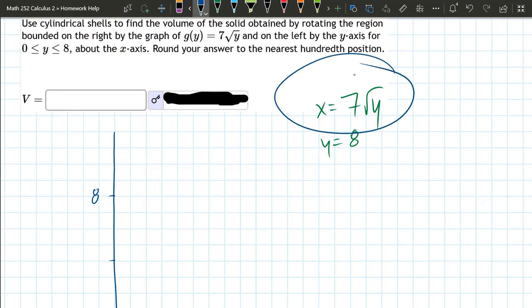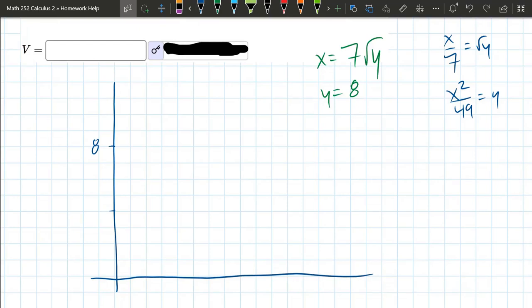How to graph this? I'm not used to it being a function of y so let's solve for y. We have x/7 = √y. We'll square both sides and x²/49 is y. So it's a parabola. The intercept is the origin right here.